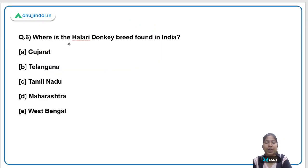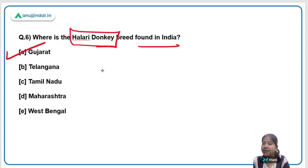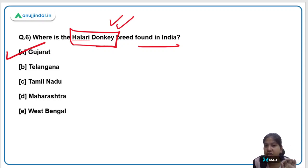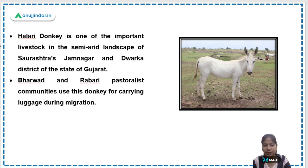The next question: Where is the Halari donkey breed found in India? The right answer is Gujarat. Whenever you come across any animal, tree, flower, or any species in the newspaper, cover the news first and then the associated facts related to that species, because examiners now tend to go into great depth.